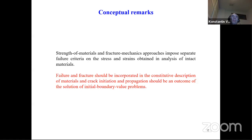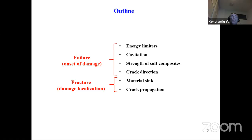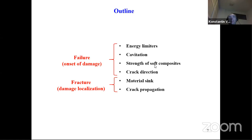The outline: I distinguish between two terms — failure and fracture. By failure I mean the onset of damage, but not its localization and propagation. Fracture I call the propagating crack; failure is only the onset of fracture. Considering failure, I will introduce the concept of energy limiters and consider three applications: the problem of cavitation in soft solids, strength of soft composites, and prediction of crack direction. Concerning fracture, I will generalize the approach of energy limiters to the material sink approach.